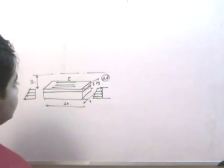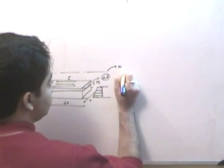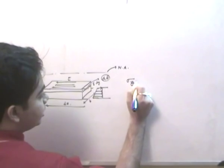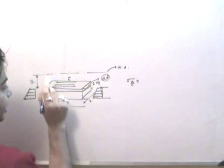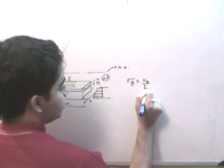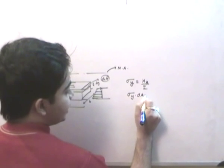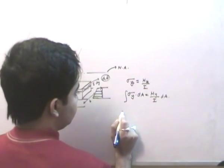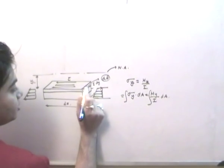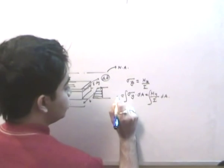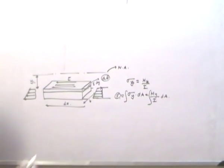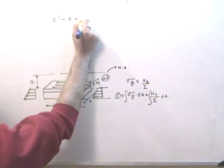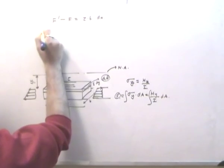The stress σ_y acting on the elemental area at distance y from the neutral axis is given by M·y / I. Then σ_y · dA is the force on that elemental area, and integrating this gives the total normal force F acting on the face of the block. We can then write the equilibrium equation: F' - F = τ · b · dx.